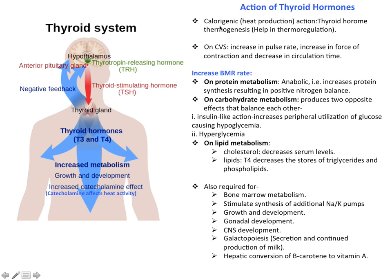First action is calorogenic or heat production activity — thyroid hormones work in thermogenesis and help in thermoregulation of the body. They also act on the cardiovascular system, increasing the pulse rate and force of contraction. They increase protein metabolism and the BMR — basal metabolic rate. On protein metabolism, they act as anabolic agents, increasing protein synthesis and resulting in a positive nitrogen balance.